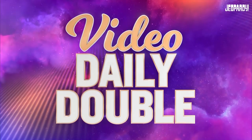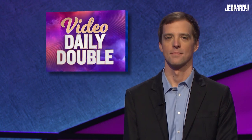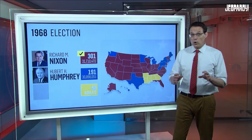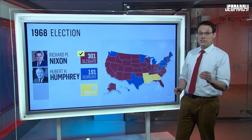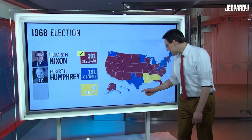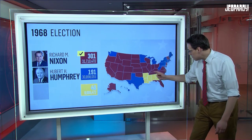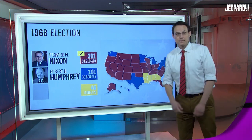Electoral College, $800. Daily double! You're going to try to double your $1,600. A third party candidate hasn't won a state in a presidential election since 1968, when this American Independent Party nominee carried Arkansas, Louisiana, Mississippi, Georgia, and his native Alabama. Who is George Wallace? You got him.